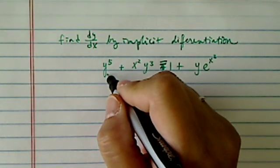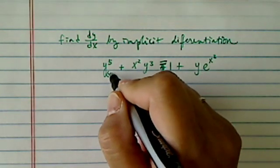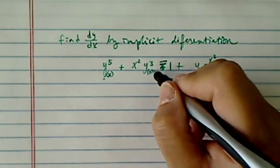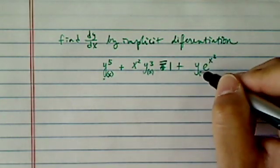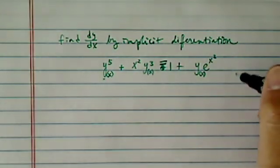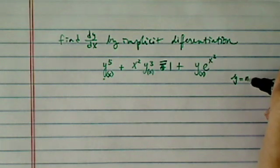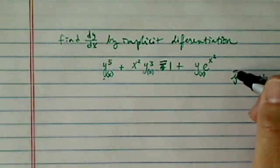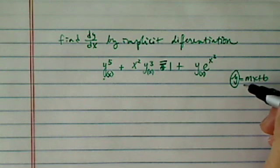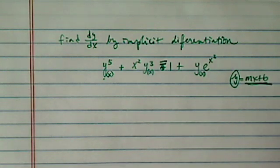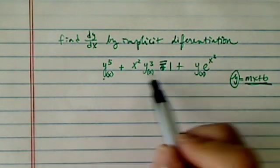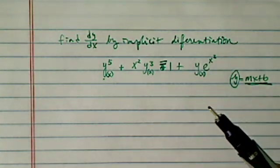Implicit differentiation really is just a fancy way to say treat y as a function of x. So if we were given, let's say, y equal to mx plus b, this one is explicit because y is expressed explicitly in terms of x, whereas here it's all mixed together.